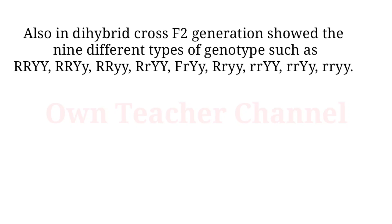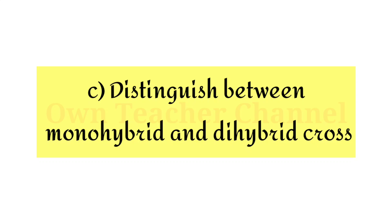In the dihybrid cross, F2 generation showed nine different types of genotypes: RRYY, RRYy, RrYY, RrYy, RRyy, Rryy, rrYY, rrYy, and rryy. Distinguish between monohybrid and dihybrid cross.